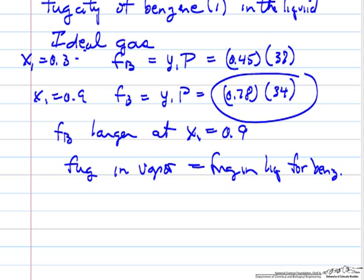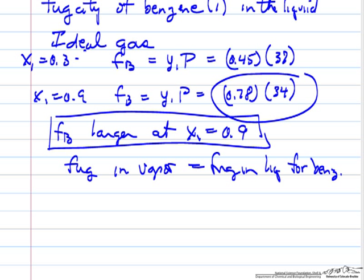Because we're at vapor-liquid equilibrium, that's our criteria for equilibrium. And so in your vapor phase, the fugacity is larger for x1 equals 0.9, and for the liquid phase.